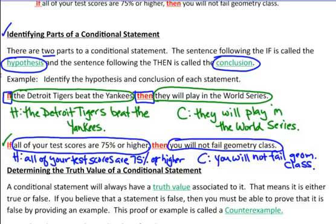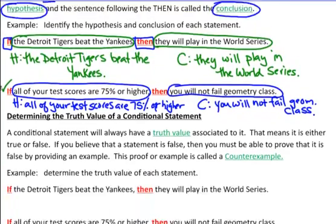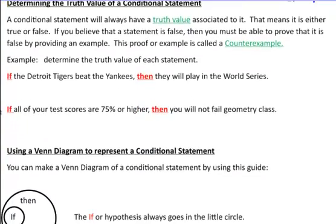Let's talk about truth values of statements. Truth values are simple — they are either true or they are false. If you can say the statement is false, then you have to be able to give an example of why it's false, and that example is what we call a counter example. So when they say 'give the truth value,' it is either true or false, and if it's false, you must provide a counter example.